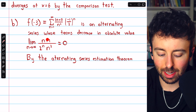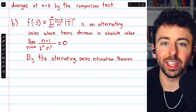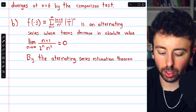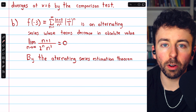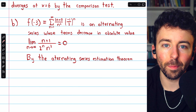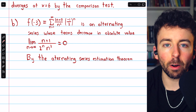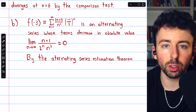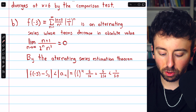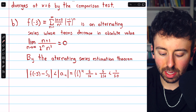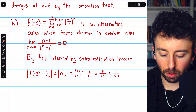Ignoring the negative, the terms of the series decrease in absolute value and converge to 0 as n approaches infinity. That's clear because the degree of the denominator, 2, is greater than the degree of the numerator, not to mention the denominator has a 2 to the n term. So these terms decrease to 0. The alternating series estimation theorem tells us the error of the nth partial sum is at most the magnitude of the n plus 1th term. The error is at most the magnitude of the first excluded term. This is the third partial sum, so the first excluded term is the fourth term, a4.